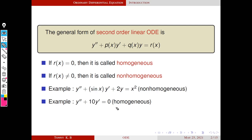Here p is 10 and q is zero — q equals zero. So p and q are given. The coefficient of y double dash should be one; this is the standard form of a second-order linear ordinary differential equation. If it is non-zero, then we have to divide throughout the equation by the coefficient of y double dash.